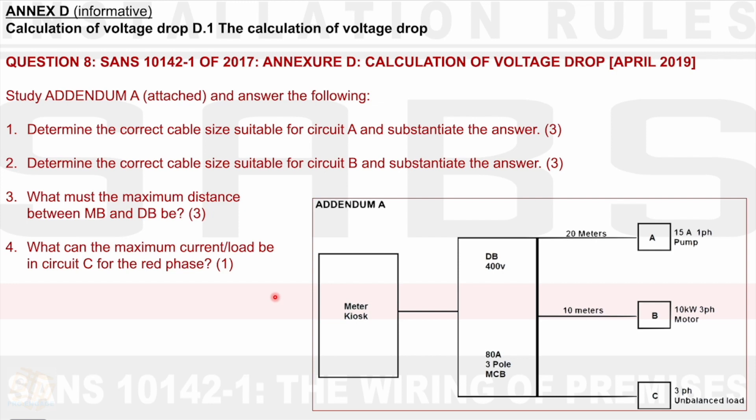The next question, question 8, study addendum A attached and answer the following. Here's your drawing. We've got a drawing here, DB beta kiosk, DB 400 volts, 80 amp, 3-pole MCB. We've got 3 loads, single phase load, 3 phase load and a 3 phase unbalanced load. There is no distance here.